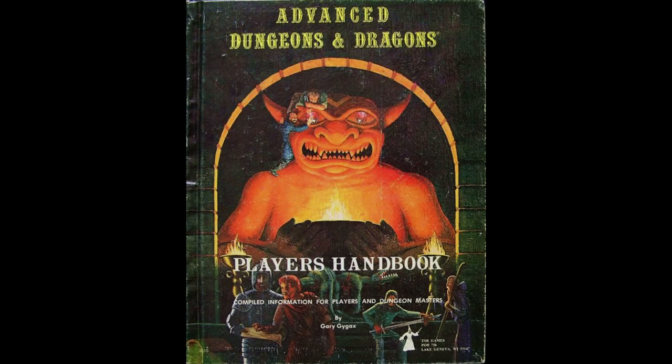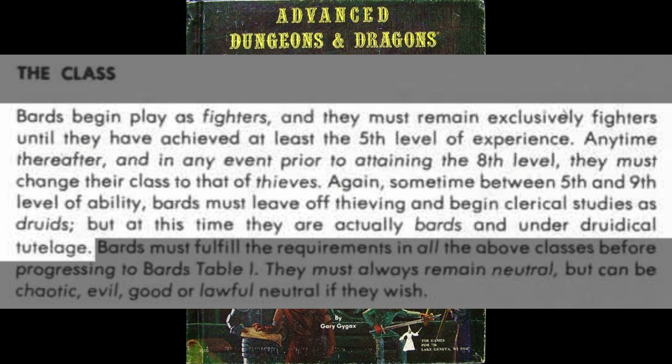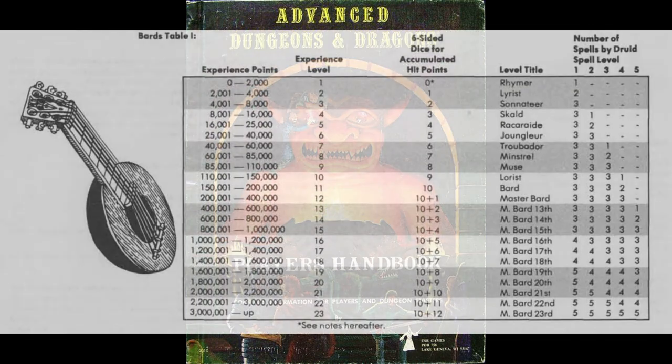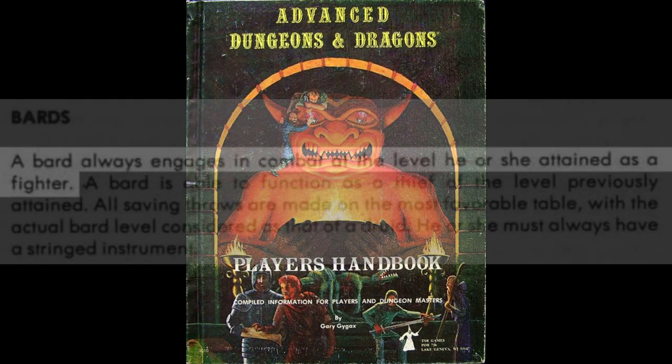Let's take a look at it in the first AD&D Player's Handbook. Bards begin play as fighters, and they must remain exclusively fighters until they have achieved at least the 5th level of experience. Any time thereafter, and in any event prior to attaining the 8th level, they must change their class to that of thieves. Again, sometime between 5th and 9th level of ability, bards must leave off thieving and begin clerical studies as druids. But at this time, they are actually bards and under druidical tutelage. After that, you can then advance to the bard table, where you will gain levels in that class.